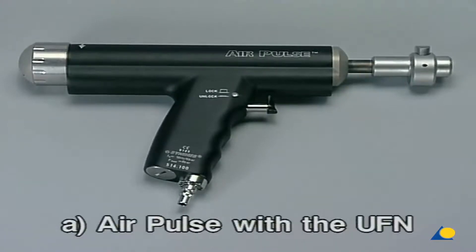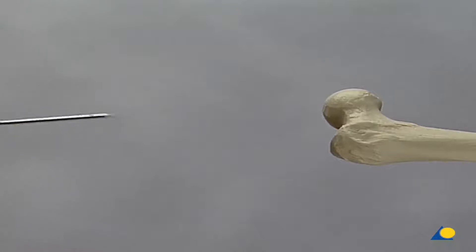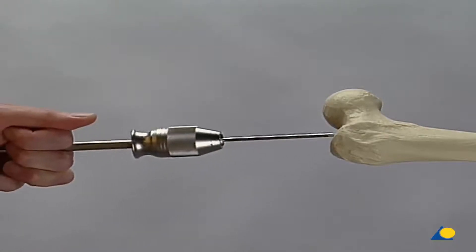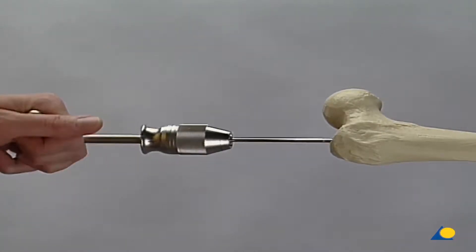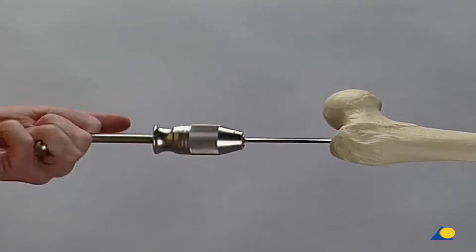Part A: The air pulse used with the UFN. The medullary canal is opened as usual. First, the guide wire is applied exactly in the fossa piriformis and inserted as far as the proximal medullary canal.